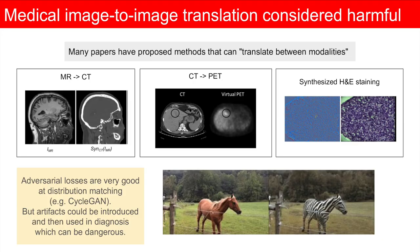There are many papers published in the last few years presenting models which transform between modalities, such as from an MRI to a CT, and claim to be able to save a patient from a radiation dose. These approaches are often using distribution matching with techniques such as CycleGANs, which provides compelling results.